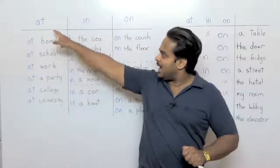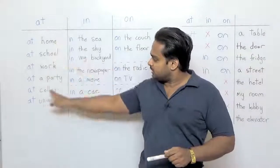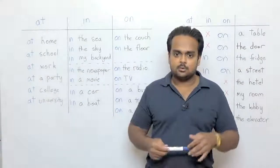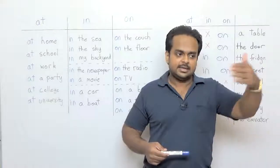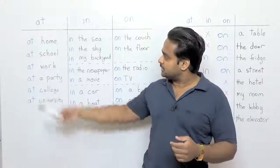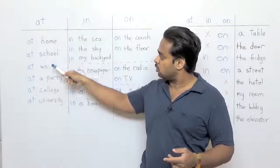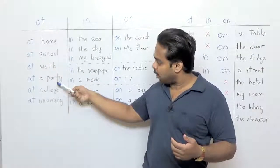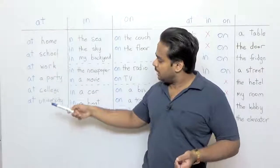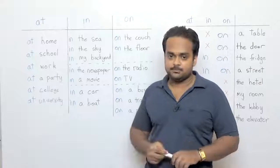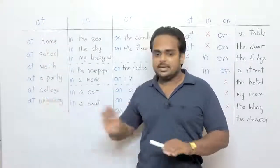Let's look at at first. All of these are answers to the question where are you or where is he or she. A person can be at home, at school, at work, at a party or at an event, at college or at university.